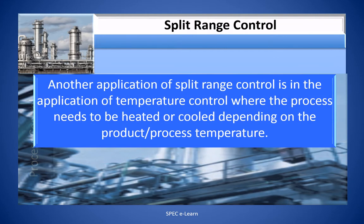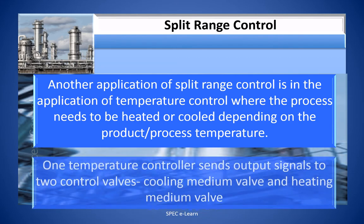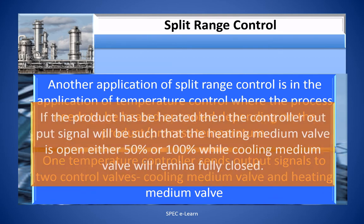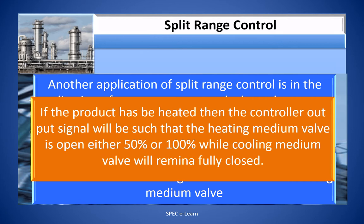Another application of split range control is temperature control, where the process needs to be heated or cooled depending on the product or process temperature. One temperature controller sends output signals to two control valves: a cooling medium valve and a heating medium valve. If the product has to be heated, the controller output signal will be such that the heating medium valve is open either 50% or 100%, while the cooling medium valve remains fully closed.